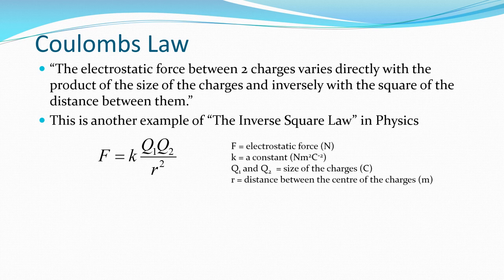Where F is the electrostatic force measured in Newtons. K is a constant in Newton's metre squared coulombs to the minus two. Q1 and Q2 are the magnitude of the charges in coulombs. And R is the distance between the centres of the charges in metres.